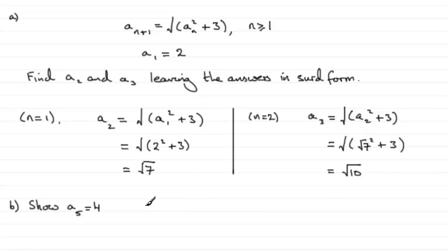we therefore have that A4 is going to be equal to the square root of A3 squared plus 3. And we know that A3 is root 10, so we've got to square that, root 10 squared, and then add 3.